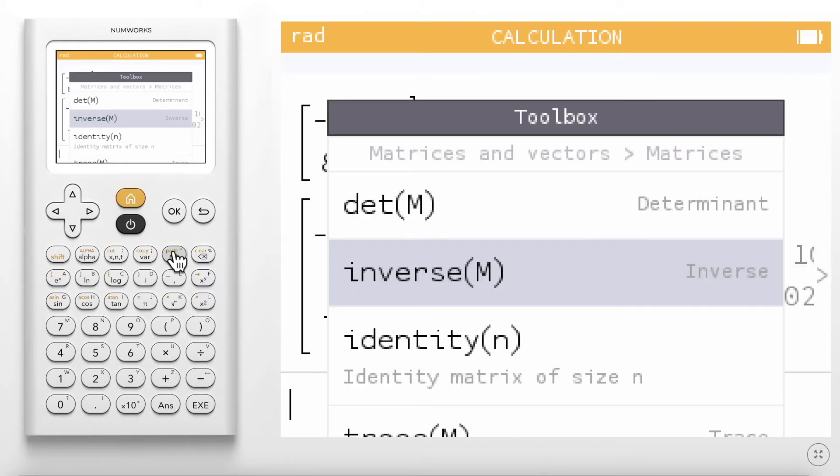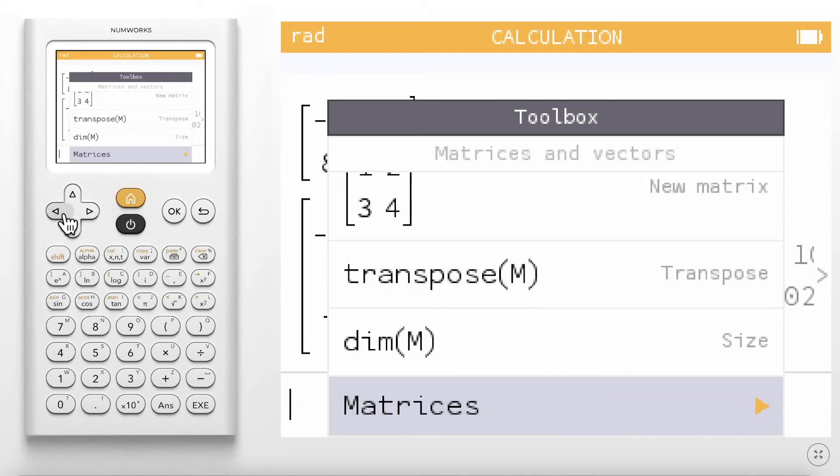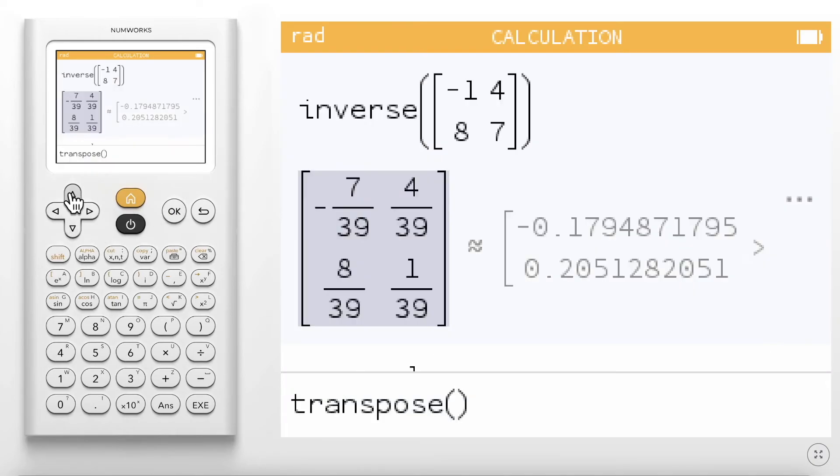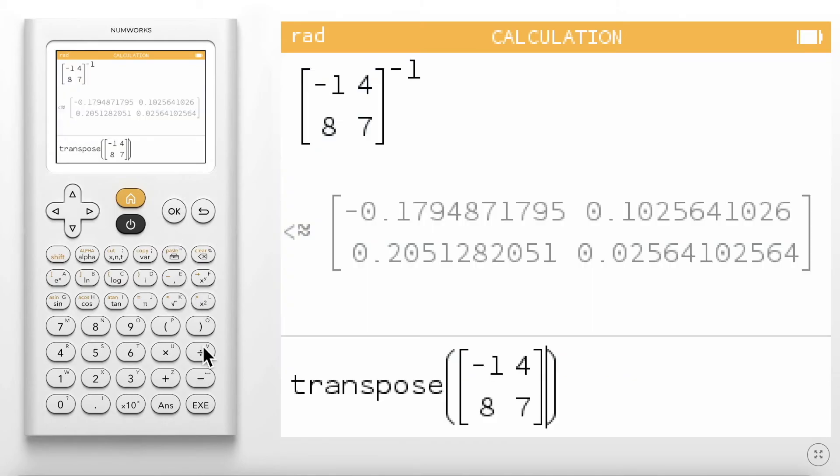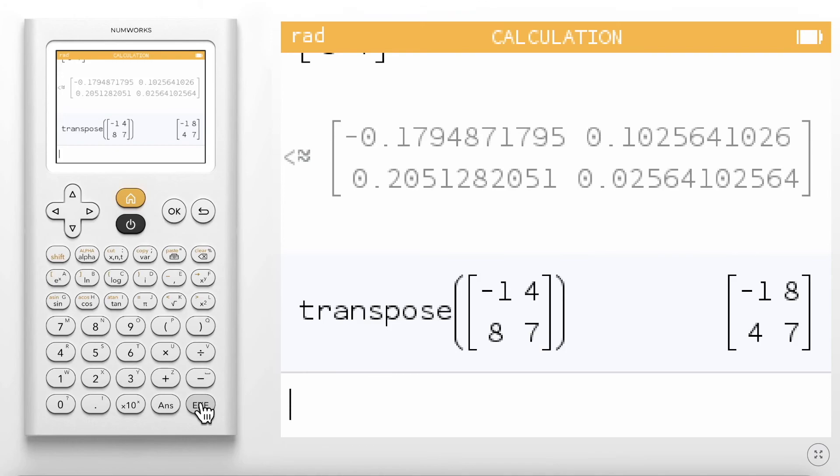Under the Toolbox in Matrices and Vectors, you will find Transpose. Scroll into your calculation history to grab your matrix and click OK. Once you hit Enter, you will see your matrix transposed.